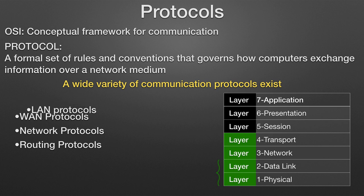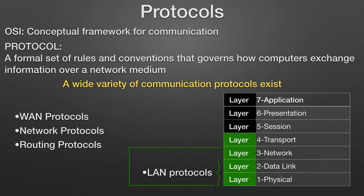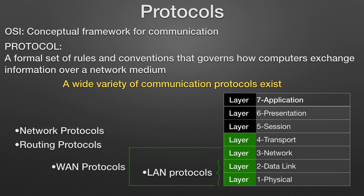LAN protocols operate at the physical and data link layers of the OSI model and define communication over the various LAN media. WAN protocols operate at the lowest three layers of the OSI model and define communication over the various wide area media.